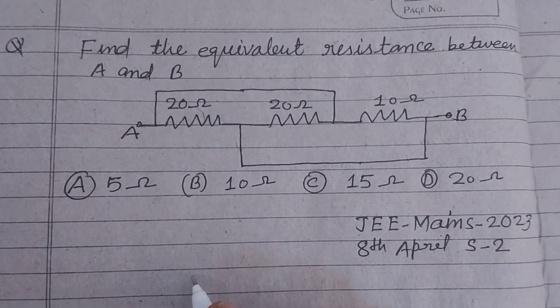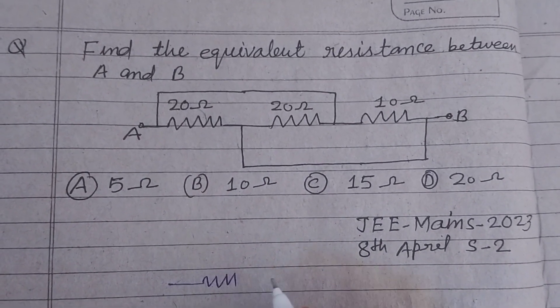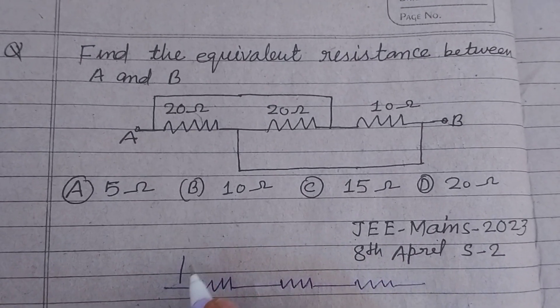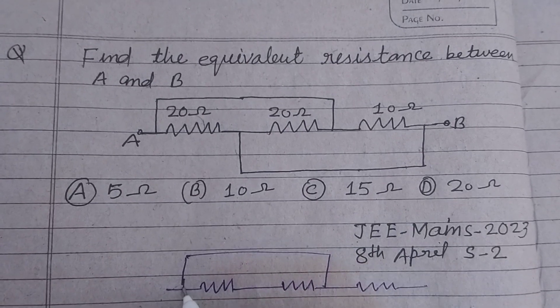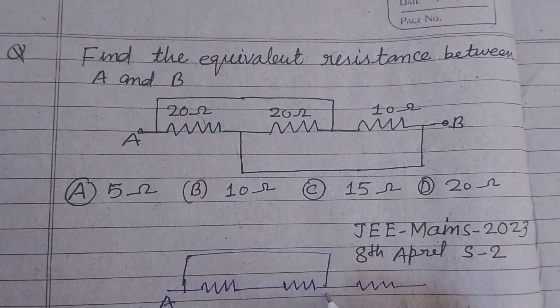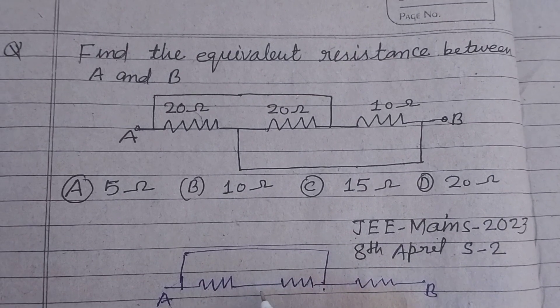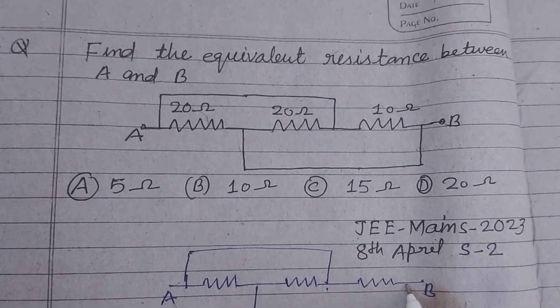So students, here we have three resistances which are connected as given in the figure. These are connected at the same potential, and these two also have the same potential.